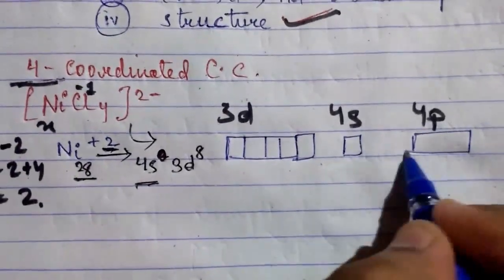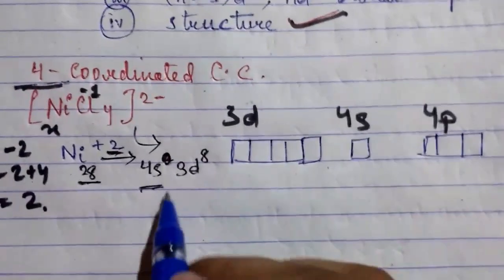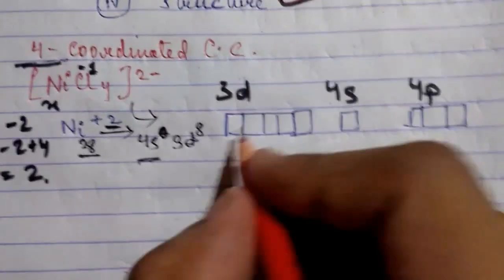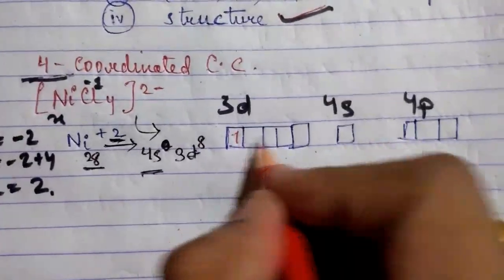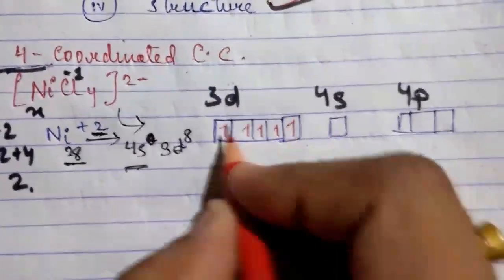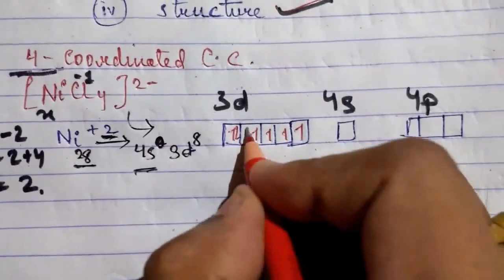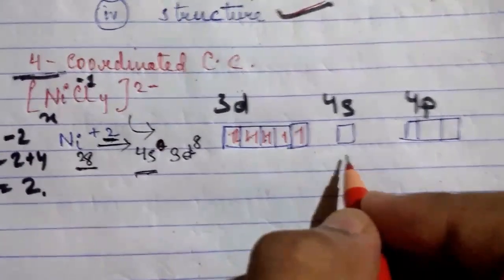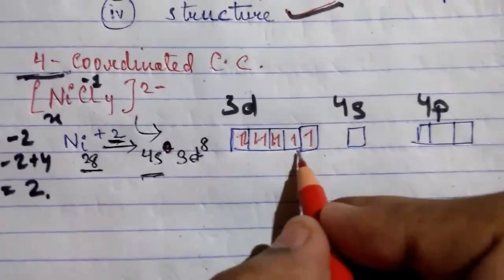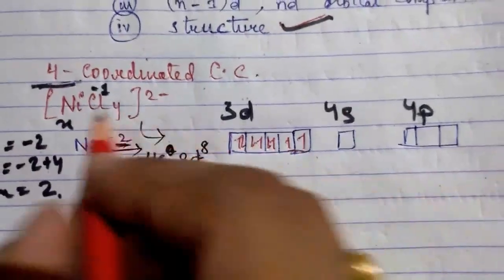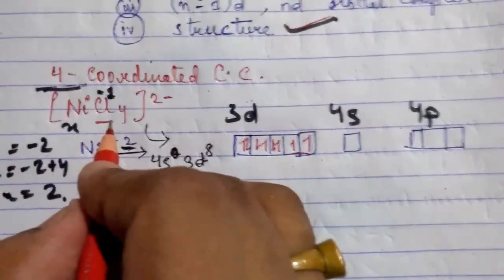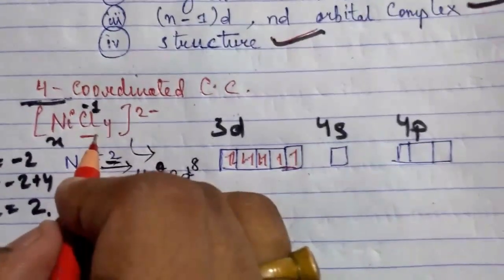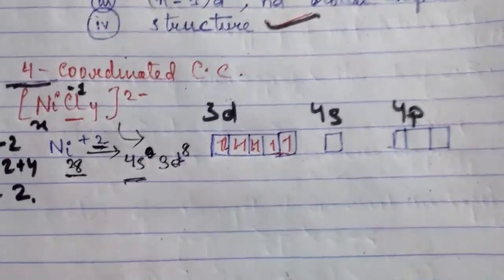So here 8 electrons are filled in the 3d orbitals: 1, 2, 3, 4, 5, 6, 7, 8 — 8 orbitals filled, leaving 2 orbitals vacant. Now, Cl is a weak ligand. Because Cl is a weak ligand, it does not cause electron pairing.